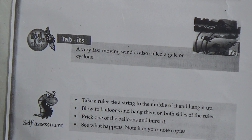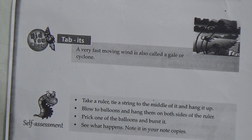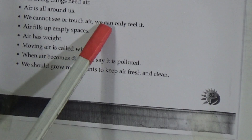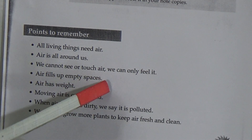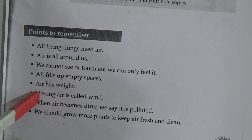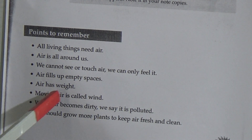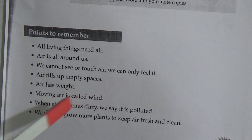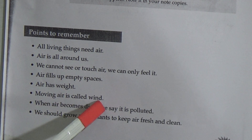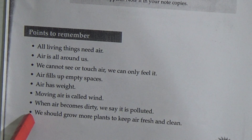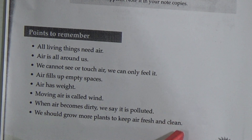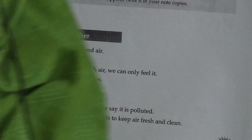Points to remember in this chapter: All living things need air. Air is all around us. We cannot see or touch air — we can only feel it. Air fills up empty spaces. Air has weight. Moving air is called wind. When air becomes dirty we say it is polluted. We should grow more plants to keep the air fresh and clean.